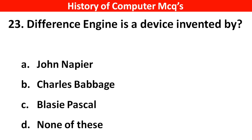Next question. Difference Engine is a device invented by — Options A: John Napier, B: Charles Babbage, C: Blaise Pascal, D: None of these. Right answer is option B, Charles Babbage.